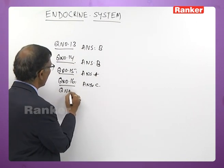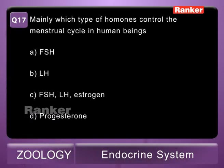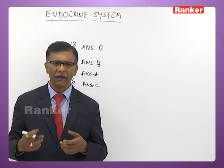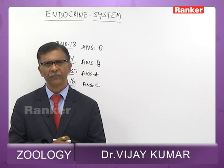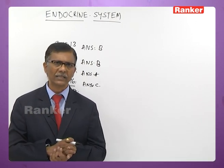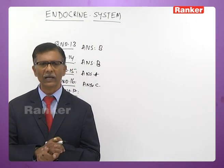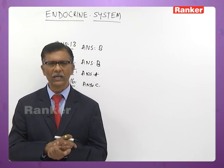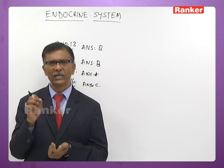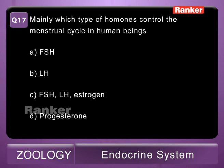Seventeenth question: which type of hormones mainly controls the menstrual cycle in human beings? A - FSH, B - LH, C - FSH, LH and estrogen, D - progesterone. FSH is initially concerned with formation and transformation of ovarian follicles into Graafian follicles, and also increases endometrial thickness. LH stimulates the Graafian follicle to release the mature ovum (ovulation). Estrogen along with FSH controls follicular growth. The correct answer is C — FSH, LH, and estrogen.